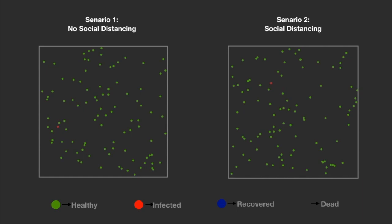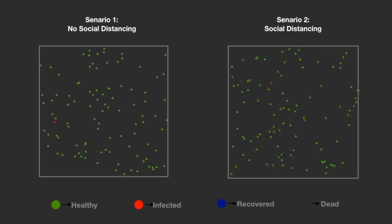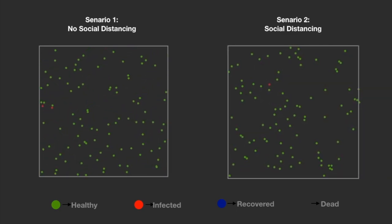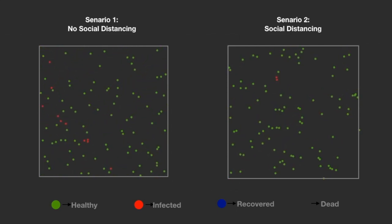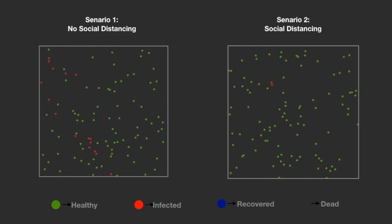It is evident by now that social distancing and lockdowns reduce the spread of the disease. Now let's take a look at how social distancing can also help reduce the death rate. This simulation shows the recovery and death rates across two scenarios, one where social distancing is maintained and one where it is not.